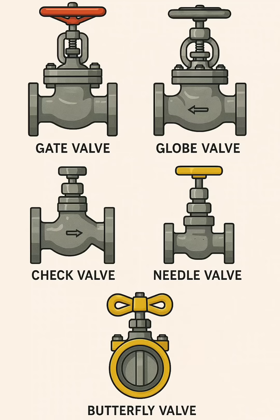Flow: Provides a short, straight flow path, but the disc is always in the flow, which creates some turbulence and pressure drop — more than a gate valve, less than a globe valve. Operation: Lightweight, compact, and can be operated manually or with an actuator. Use: Often used in large-diameter pipelines, ballast systems, and low-to-medium pressure service where space and weight savings are important.